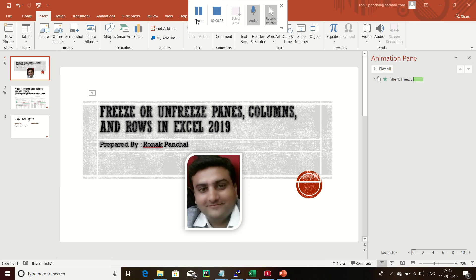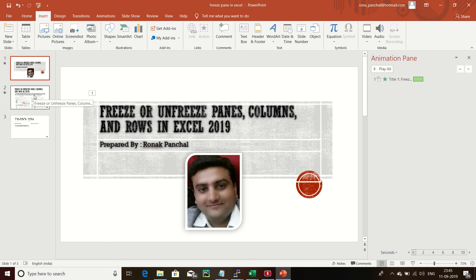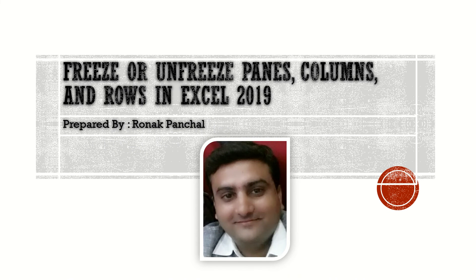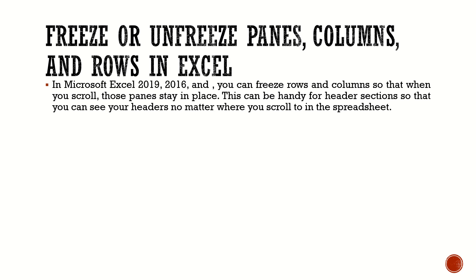Hello guys, I am going to teach you what is freeze panes — unfreeze panes column wise and row wise in Excel 2019. So first of all, what is freeze panes? In Microsoft Excel 2019 and 2016, you can freeze rows and columns so that when you scroll, those panes stay in place. This can be handy for the header section so that you can see your header no matter where you scroll in the spreadsheet.